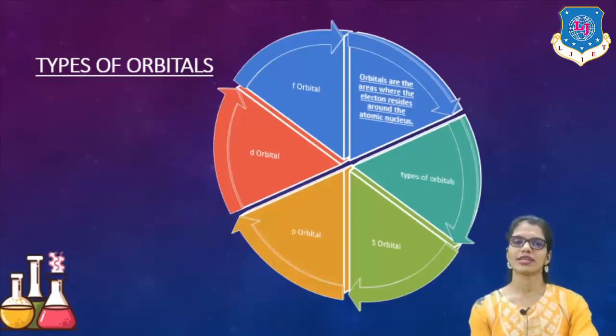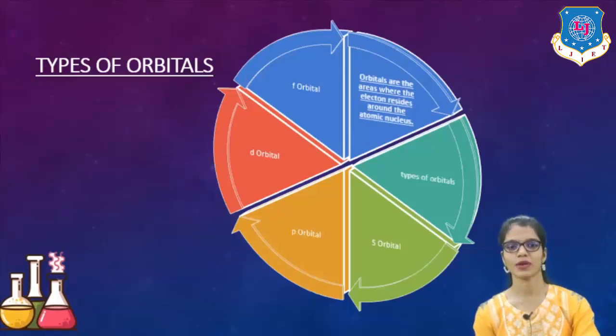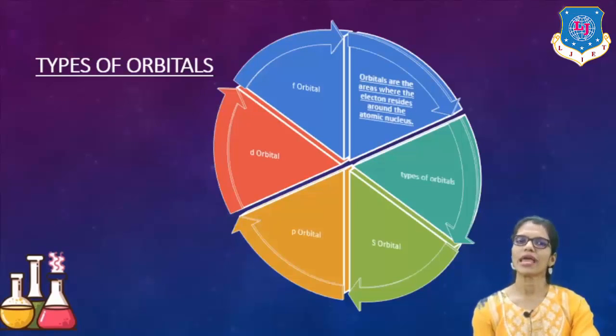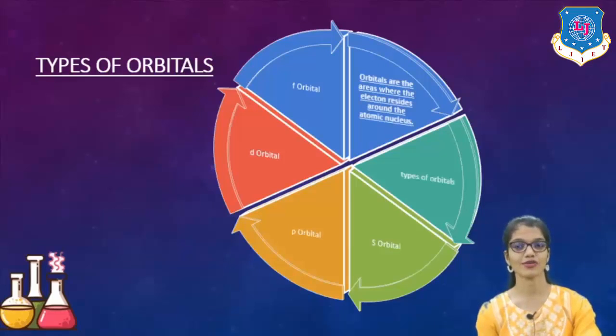Let's move on to the next one: what do you understand by atomic orbitals? To understand what is an atomic orbital, orbitals are the areas where the electron resides around the atomic nucleus. So the atomic orbitals are the areas which surround the atomic nucleus in which the electron moves or electron resides. It is a home of electrons.